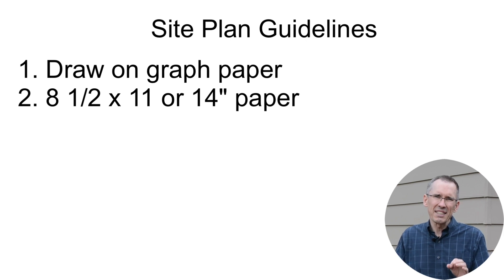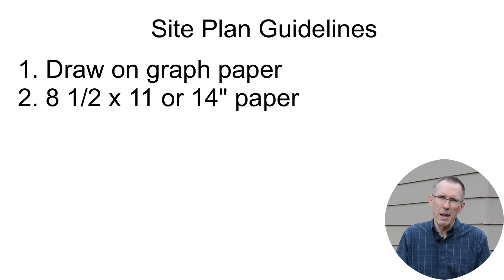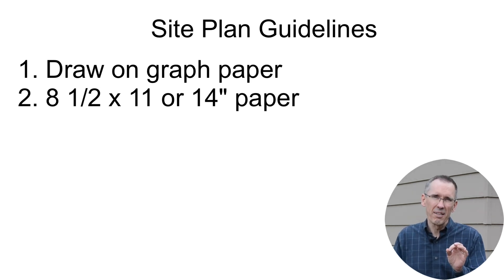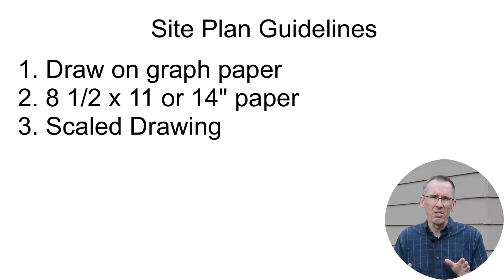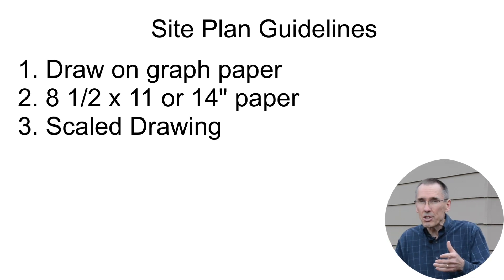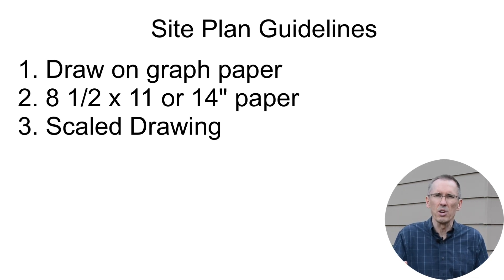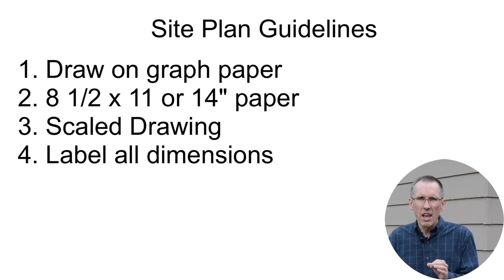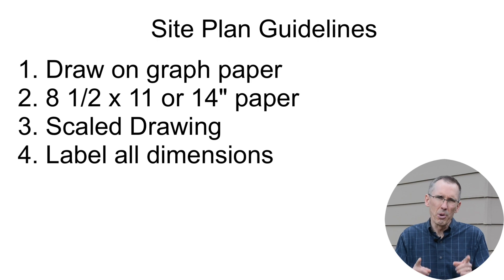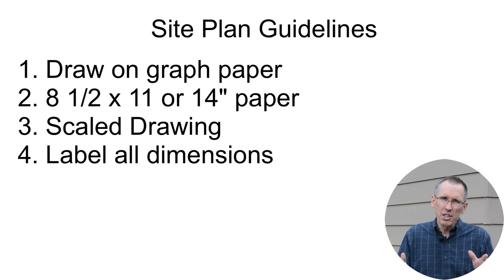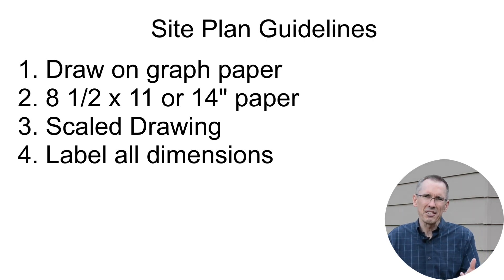Number two, size wise, site plans can generally be drawn on 8.5 x 11 or 8.5 x 14 paper. Check with your local building authority to be sure what they require. Number three, your drawing must be to scale. Your scale might be one quarter inch on the drawing equals one foot in real life, or one inch on the drawing equals 20 feet in real life. Number four, every dimension shown on your site plan must be labeled. If you need help with this, check with your local building authorities to see if they will provide you with a printout of your property. This will show property lines, dimensions, neighboring properties, etc.